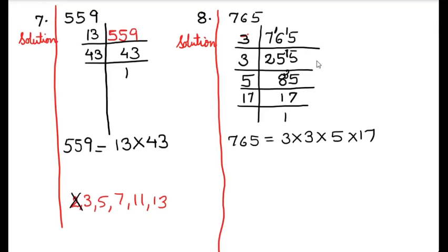So I have solved 8 sums in practice set 11, which has a total of 10 sums. You will solve these 8 and then find which 2 are remaining. Those remaining 2 sums are very easy. I have explained you 8 sums, so surely you can solve the remaining 2. Complete practice set 11. I hope you have understood how to find the prime factors of given numbers. Do complete practice set 11 in neat and good handwriting in your CW.